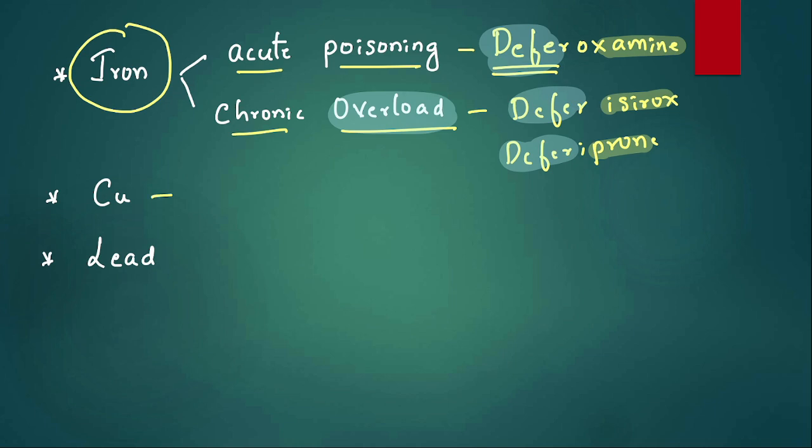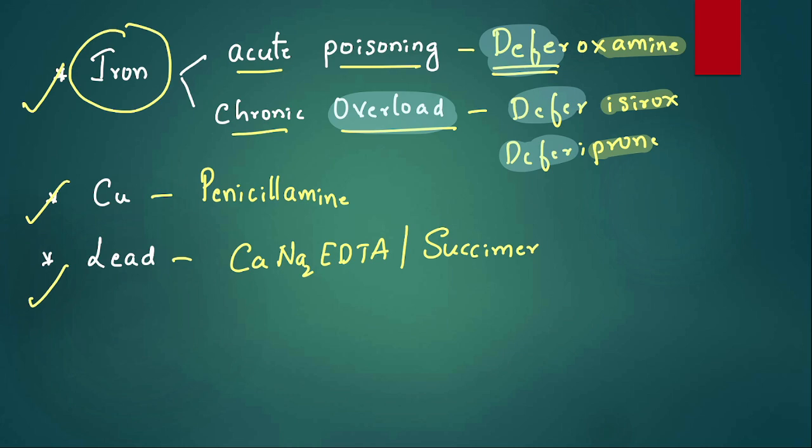For copper poisoning we use penicillamine. Not only we use penicillamine for copper poisoning, we use it in Wilson's disease. Earlier it was used for rheumatoid arthritis. Lead poisoning: we use calcium disodium EDTA or an older drug called succimer, also called dimercaptosuccinic acid. So lead we can give calcium disodium EDTA or succimer, also called dimercaptosuccinic acid.